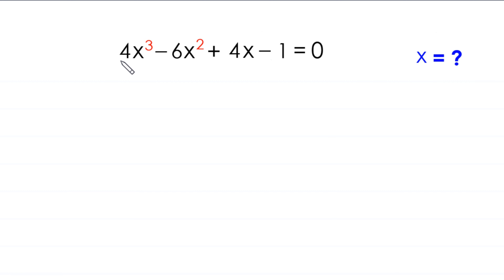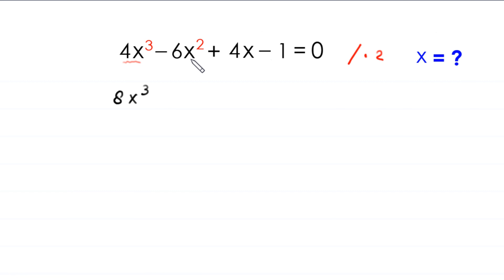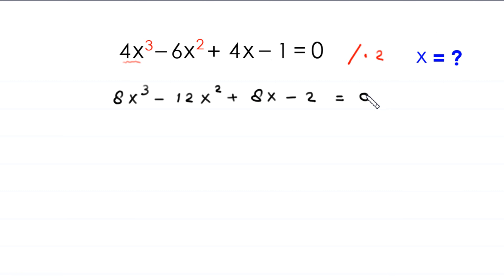We notice that 4x³ is not a perfect cube. To make it a perfect cube, we multiply the whole equation by 2. So 2×4x³ = 8x³, 2×(−6x²) = −12x², 2×4x = +8x, and 2×(−1) = −2, so the equation becomes 8x³ − 12x² + 8x − 2 = 0.